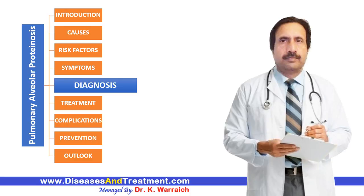How do doctors diagnose this condition? If your doctor suspects pulmonary alveolar proteinosis, they will perform a physical examination and listen to your chest. They will then order chest X-rays to look for white patches in your lungs, a CT scan or other imaging tests, blood tests to check for antibodies related to PAP, pulmonary function tests to assess the lungs' capacity to exchange gases, bronchoscopy with a saline wash to obtain a fluid sample from the lungs, and a lung biopsy to examine tissue under the microscope.